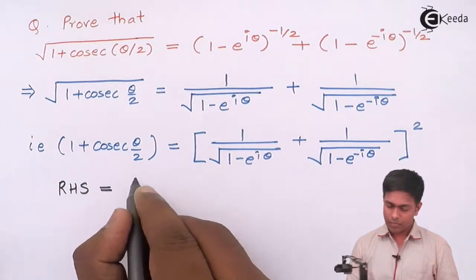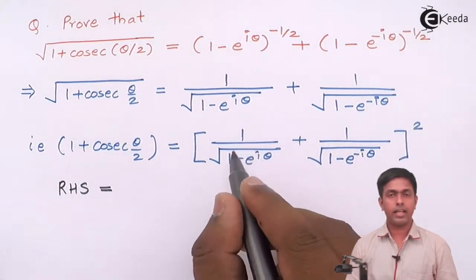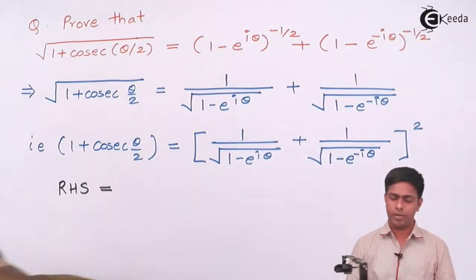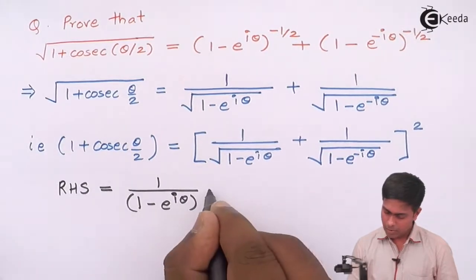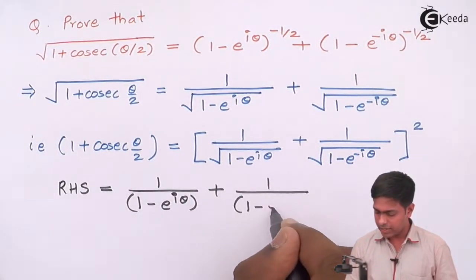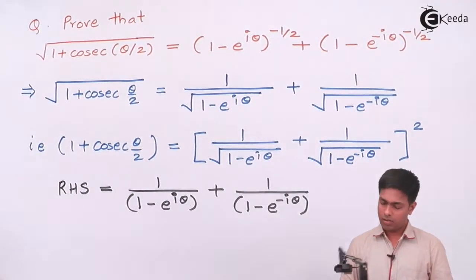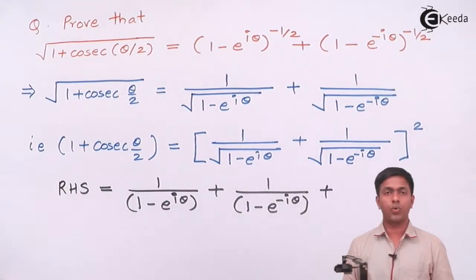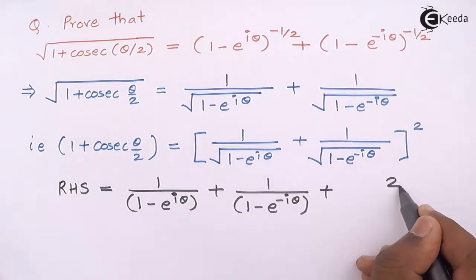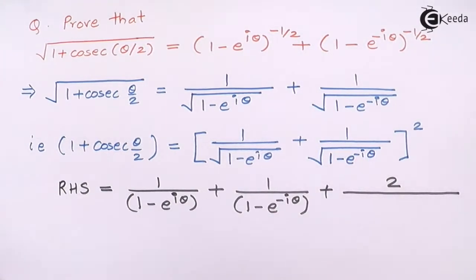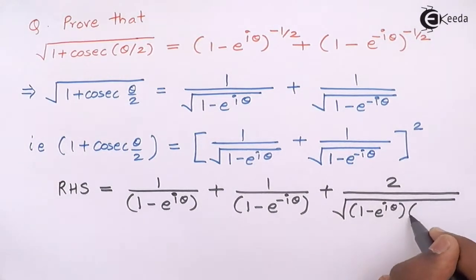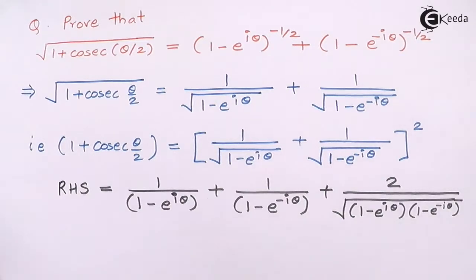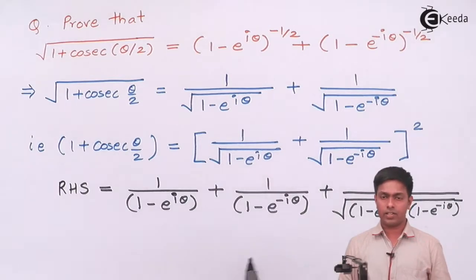RHS is the square of (1/√(1 - e^(iθ)) + 1/√(1 - e^(-iθ))). Using (a + b)² = a² + b² + 2ab, this gives 1/(1 - e^(iθ)) + 1/(1 - e^(-iθ)) plus the 2ab cross term.